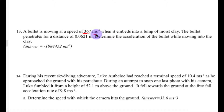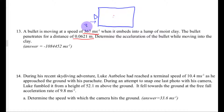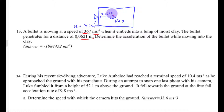A bullet is moving at a speed of 367 meters per second when it embeds into a lump of moist clay. The bullet penetrates for a distance of 0.0621 meters. The bullet moves into the clay until it is stopped, so the initial velocity is 367 meters per second, the final velocity equals 0, and the displacement is 0.0621 meters.